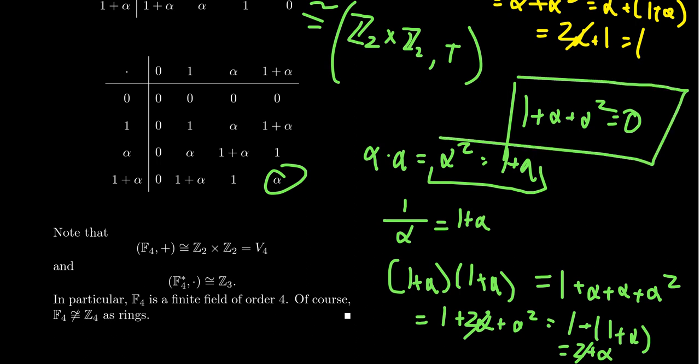The fact that α was a root of this irreducible polynomial led to the construction of a simple field extension. In the case of a simple extension of a finite field, you get another finite field. We will see in the future that you can create finite fields by generalizing this concept. For now, we've constructed the finite field of order four.